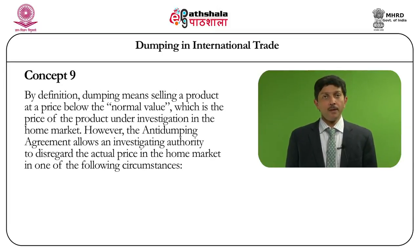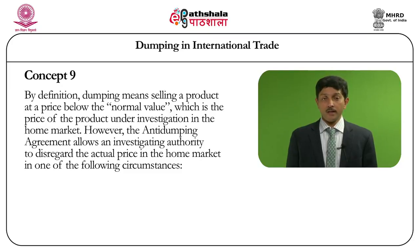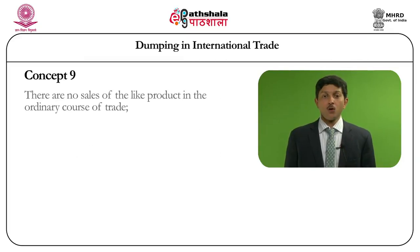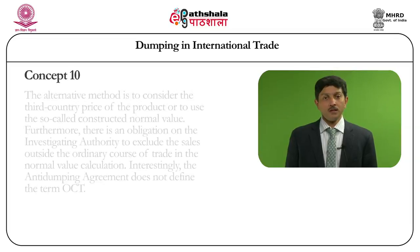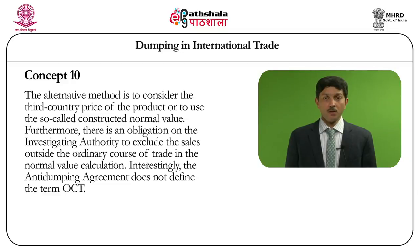By definition, dumping means selling a product at a price below the normal value. The normal value is the price of the product under investigation in the home market of the exporting country. However, the Anti-Dumping Agreement allows an investigating authority to disregard the actual price in the home market in one of the following situations: first, there are no sales of the like product in the ordinary course of trade; second, a proper comparison cannot be made because of the particular market situation or the low volume of sales in the exporting country. The alternative method is to consider the third country price or to use the so-called constructed normal value. Furthermore, there is an obligation on the investigating authority to exclude sales made outside the ordinary course of trade in the normal value calculation.